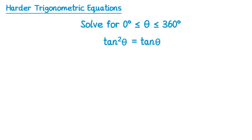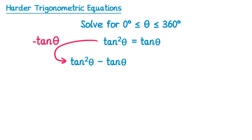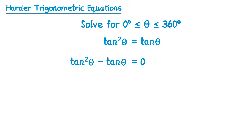Let's start by looking at this equation. We're going to solve it for theta values between 0 and 360, inclusive. Our general strategy is to move all terms to the left hand side so that the right hand side equals 0. At the moment on the right hand side we have tan theta, so we'll subtract that from both sides. On the left we get tan squared theta minus tan theta, and on the right, tan theta minus tan theta is 0.